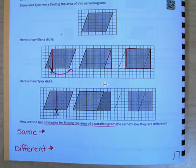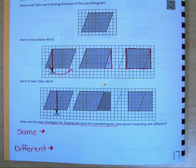Alright, you should have at least one thing that was the same and one thing that was different between Elena and Tyler's strategies. Here are just a couple ideas of something that you might have written down. For the same, you might have that they both cut off a piece from the left side of the parallelogram, that they both moved a piece from the left side to the right side, you might have that they both made a rectangle, or that the rectangles are the same size after they've rearranged their parallelogram. Any of those are perfectly fine.